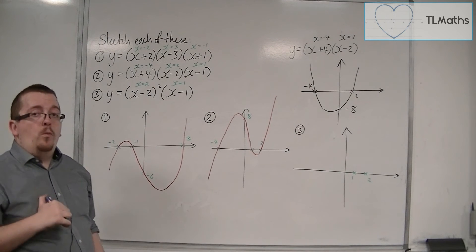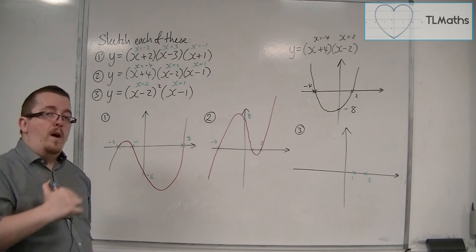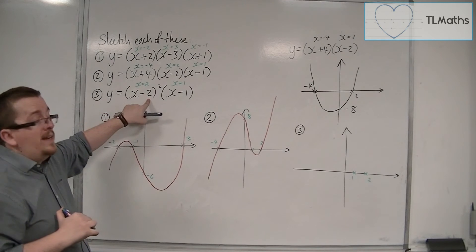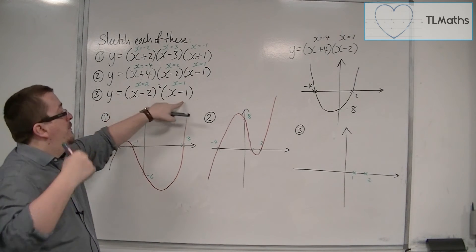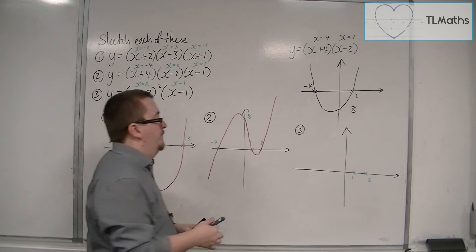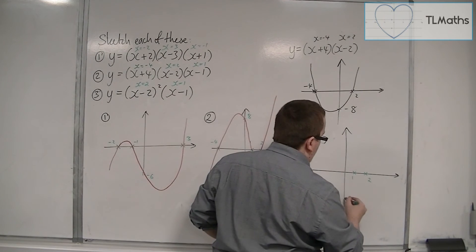Now, we can also look at where it's crossing the y-axis. We've got two brackets with minus 2 here, so we've got minus 2 times minus 2 times minus 1, and that's minus 4.